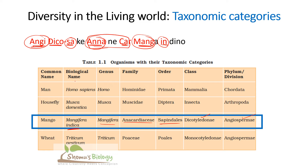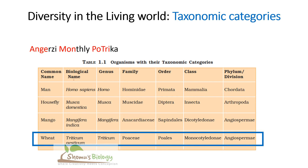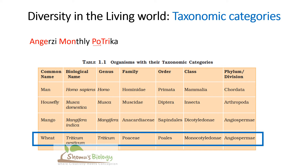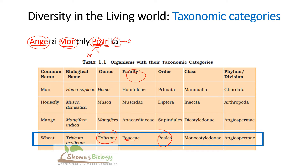The last one is the taxonomic category of wheat. The sentence is: 'Angresi monthly patrika' — where 'patrika' is spelled P-O-T-R-I-K, a Bengali-style spelling meaning magazine. 'Angresi' stands for Angiosperm; 'monthly' for Monocotyledon; 'po' in patrika for Poales (order) and Poaceae (family); 'tri' for Triticum; and 'A' at the end for aestivum. So Triticum aestivum is the biological name. From 'Angresi monthly patrika' you can easily find the taxonomy category for wheat.